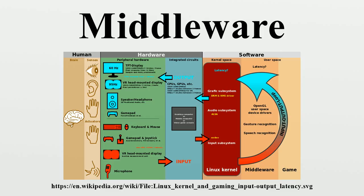The QNX operating system offers middleware for providing multimedia services for use in automobiles, aircraft and other systems. MHP is a middleware standard designed by the DVB project for interactive digital television, enabling the reception and execution of interactive Java-based applications on a television set. Universal Home API, or UH API, is an application programming interface for consumer electronics appliances, with the objective of enabling standard middleware to run on audio-video streaming platforms via a hardware-independent industry standard API.